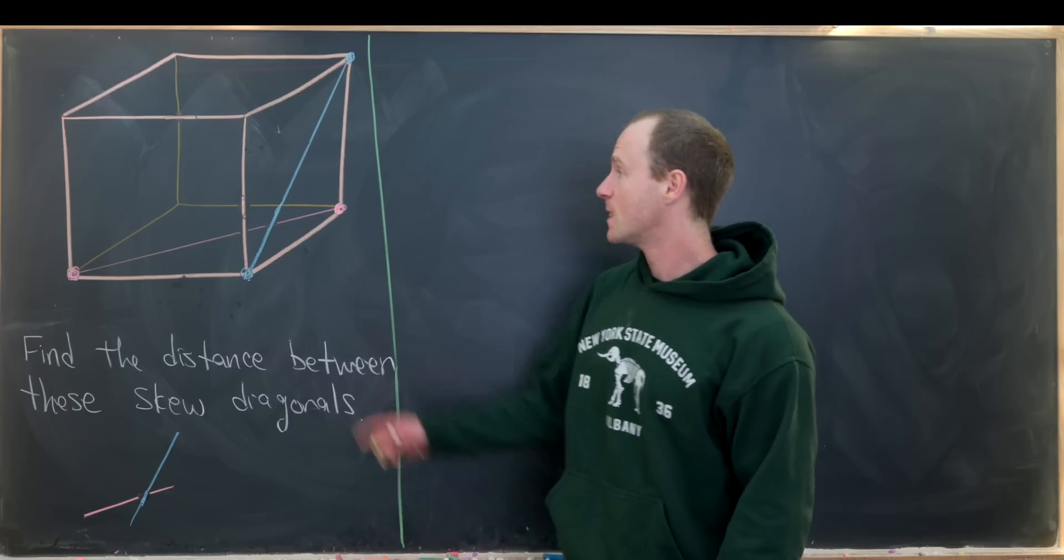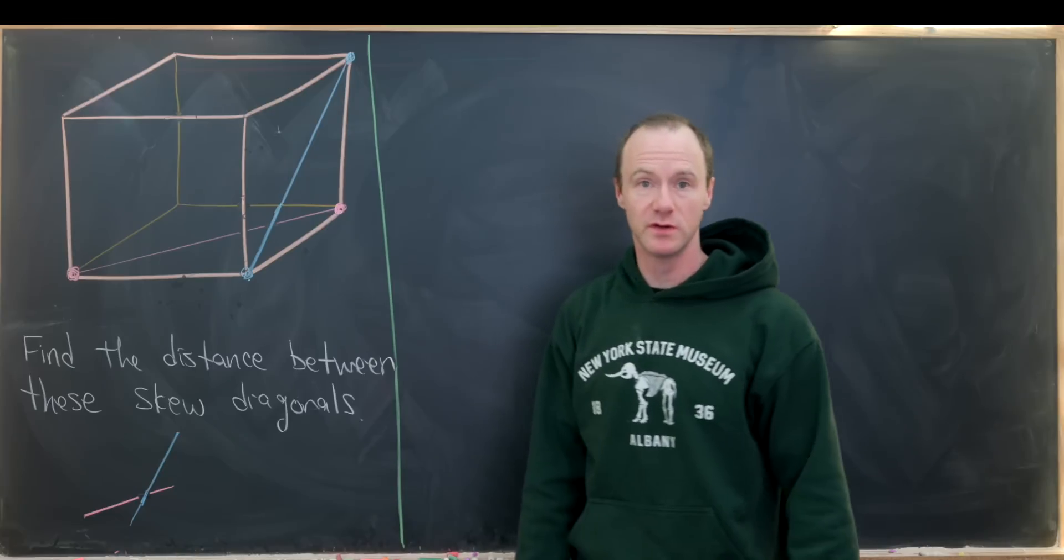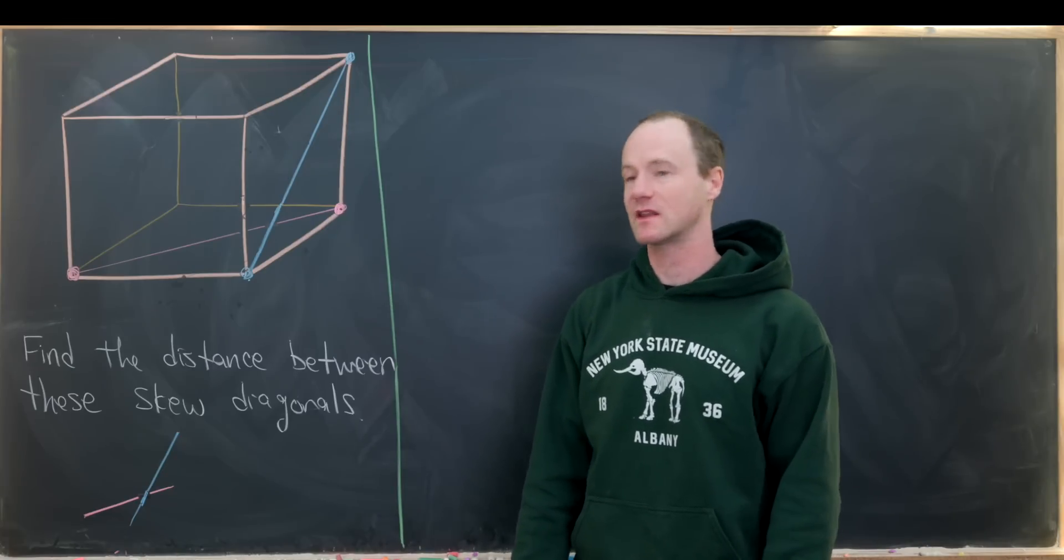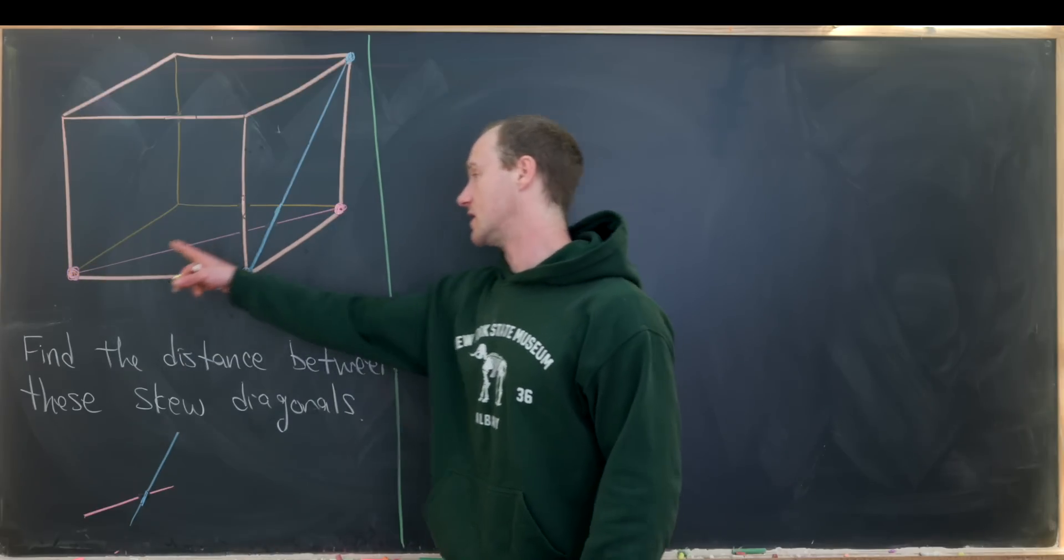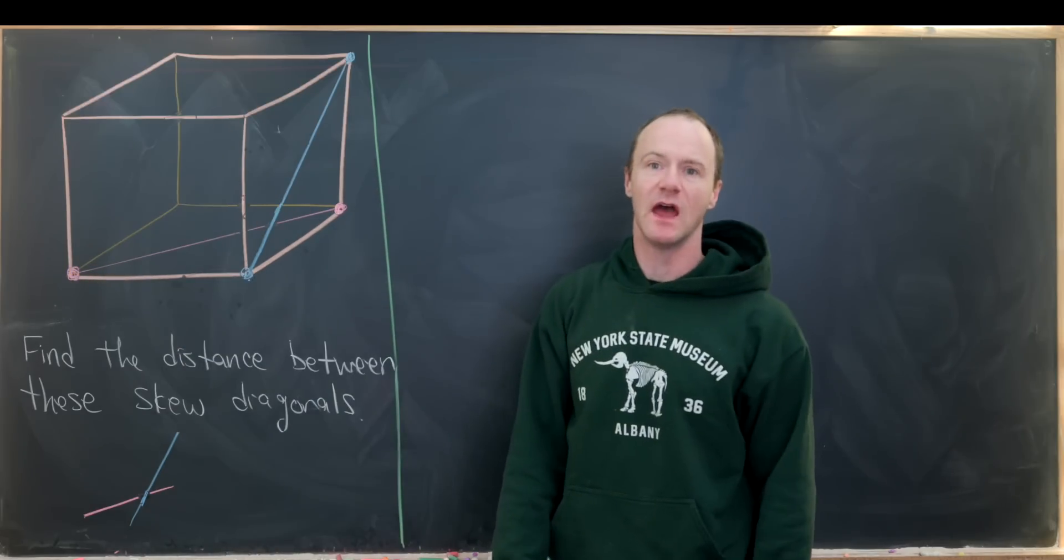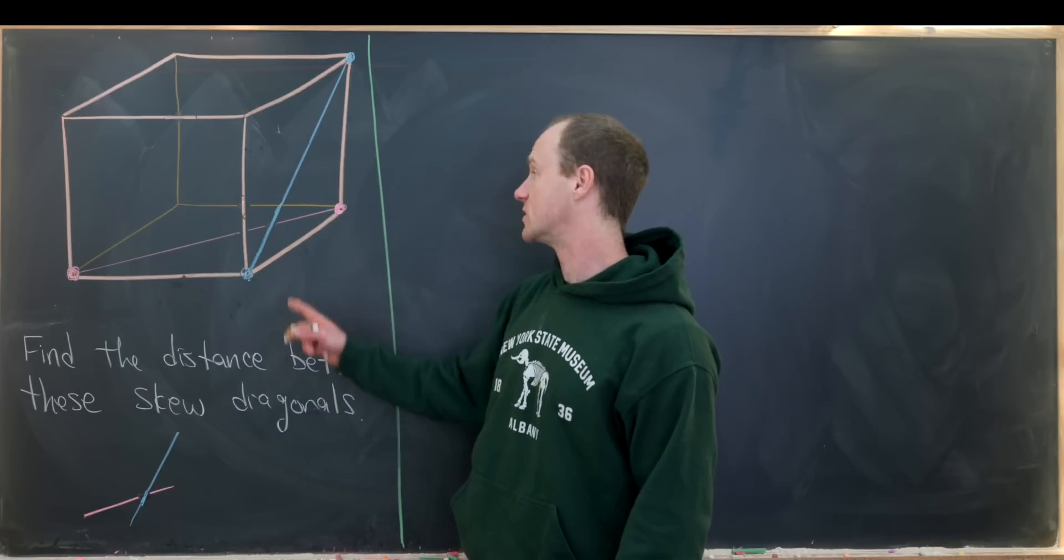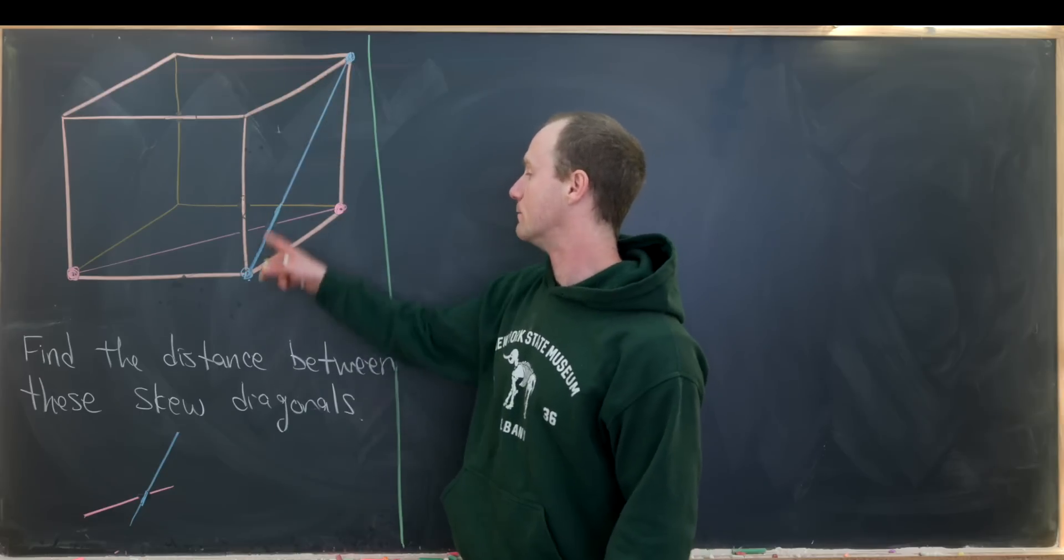So let's see what we have. We have a unit cube, so that means it's a cube where the side length is 1, and then in the base of the cube I've put a diagonal here, so this is in pink. And then on the right side of the cube I've put a diagonal in blue here.